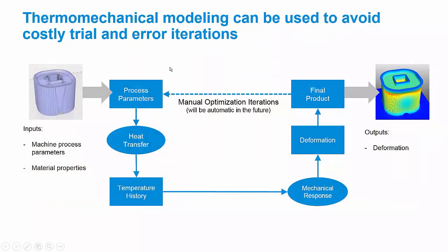Because these trial-and-error iterations that it takes to get a successful build are very costly, it would be more cost-effective to run a thermal mechanical simulation before actually going to the machine. If you know your machine process parameters and your material properties, you can input those into a heat transfer analysis to calculate the temperature of the part and all of the nodes during the entire build process. You can then take those temperature predictions and feed them into a mechanical response calculation to get the deformation and stress during the build, and then decide whether the design needs further iteration before going to the machine.